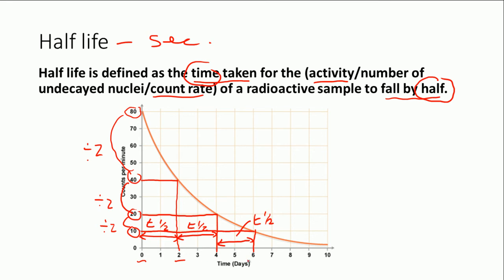So after six days you have reached three half-lives of this particular radioactive isotope. We've gone from 80 to 40 — that's one half-life. Halved again from 40 to 20 — that's another. And halved again from 20 to 10 — that's the third half-life. So in six days we will actually have an eighth of our initial count rate because we've divided by two three times. And that's how half-life curves work.